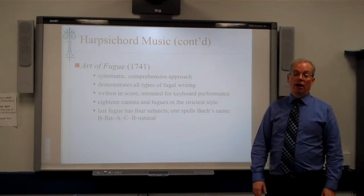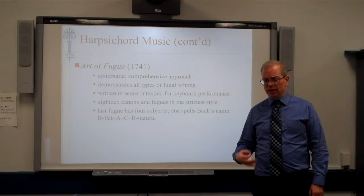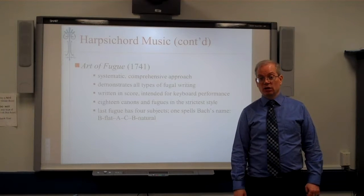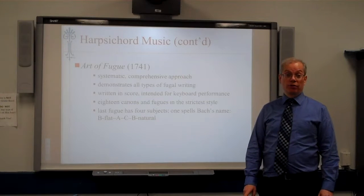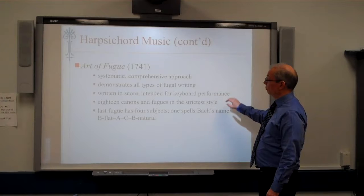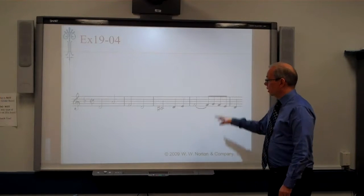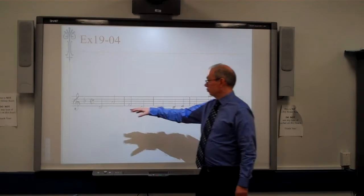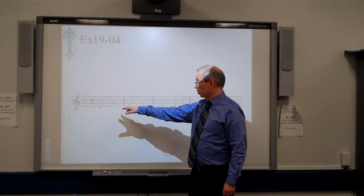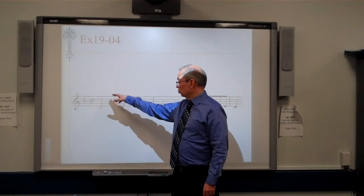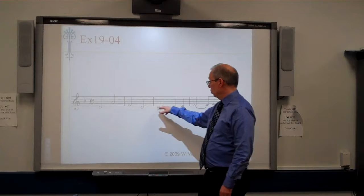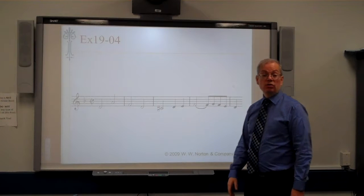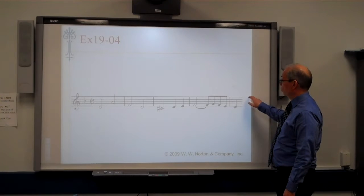The Art of Fugue represents comprehensive fugal writing. The fugues assigned for extra credit were the first four fugues from the Art of Fugue. The theme Bach used is in D-minor, and we start by outlining a D-minor triad. He uses this theme as the basis of all of the fugues in the collection.